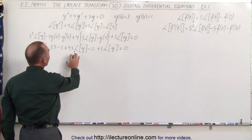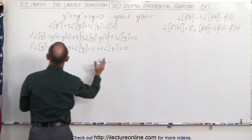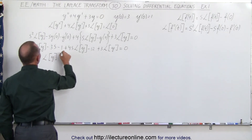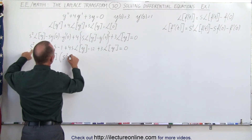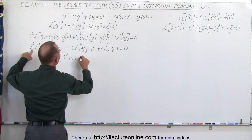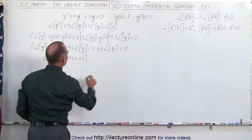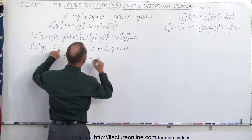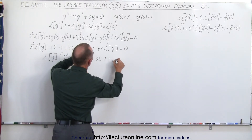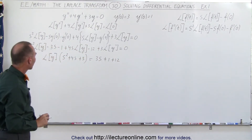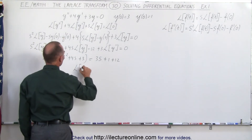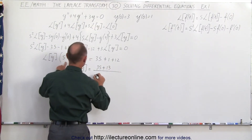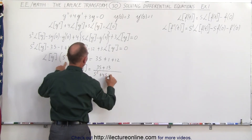Now I'm going to move everything that doesn't contain the Laplace transform of y to the right side and factor out the Laplace transform of y. So the Laplace transform of y times s squared plus 4s plus 3 equals 3s plus 1 plus 12, giving us 3s plus 13. Solving for the Laplace transform of y, we get (3s + 13) divided by (s squared + 4s + 3).